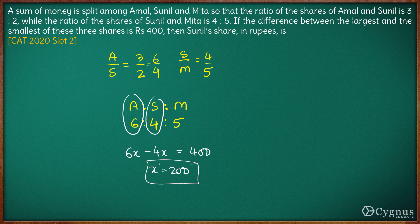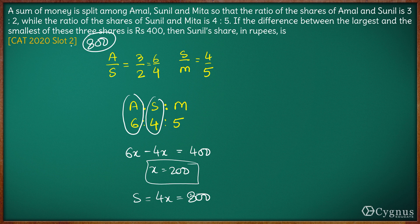x is 200, and we have to figure out the amount which Sunil got. Sunil got 4 times x, which is 4 times 200, equaling 800. So the amount with Sunil is 800. The answer to this question is 800.